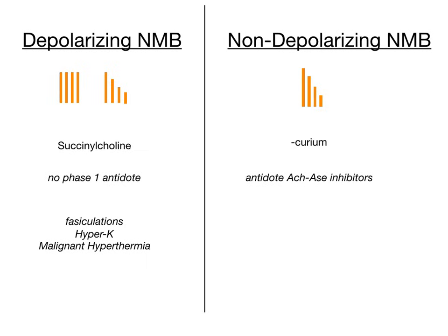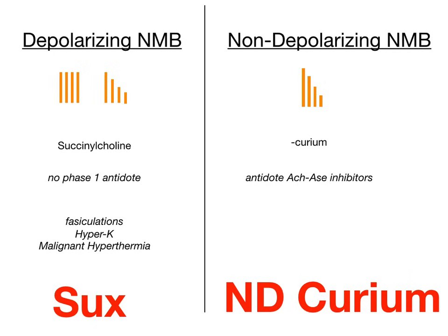Depolarizing versus non-depolarizing: the mnemonic I use is 'depolarizing sucks and ND curium.' Sucks for succinylcholine — it sucks because it can cause fasciculations, hyperkalemia, rhabdomyolysis, and malignant hyperthermia. Sucks reminds me of succinylcholine, and it reminds me that the depolarizing neuromuscular blocker just sucks all of the life out of the receptor by stimulating it for so long. ND curium: the ND reminds me of non-depolarizing, and curium is obviously all of those agents ending in curium. Curium sounds like 'curious,' and I find it curious that these agents don't stimulate any action at the receptor — they just cause that fade effect. So depolarizing sucks, and ND curium are curious agents that don't do anything.